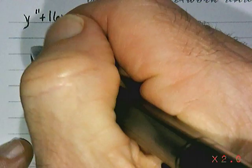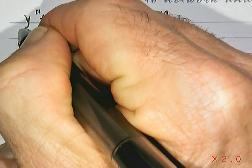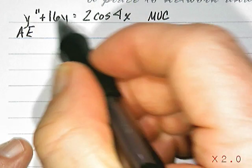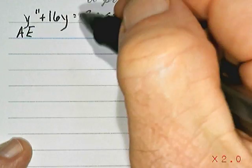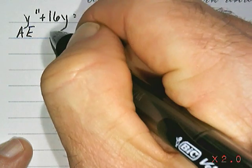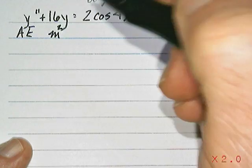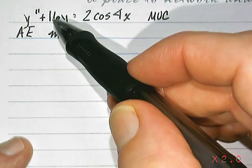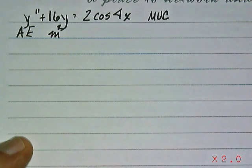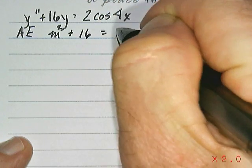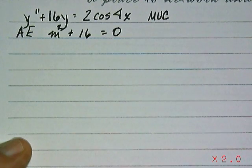Very first thing you want to do is get that complementary solution, so we need the auxiliary equation right off the bat. Look at the coefficients on each of the derivative terms. You have a coefficient of 1 on the y double prime term, so that would correspond to m squared in the auxiliary equation. You don't have a y prime term in this differential equation, so the coefficient in front of the m would be 0. And then the last coefficient you have is 16, and you set that quadratic equation equal to 0.